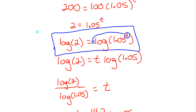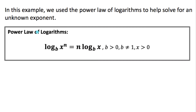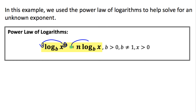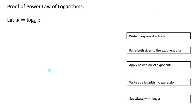Now let's focus on this rule where I brought the exponent of the argument down and wrote it as the coefficient of the log. That's called the power law of logarithms. The rule tells you: you can take the exponent of the argument and write it as the coefficient of the log. Let me now give you a proof of that.